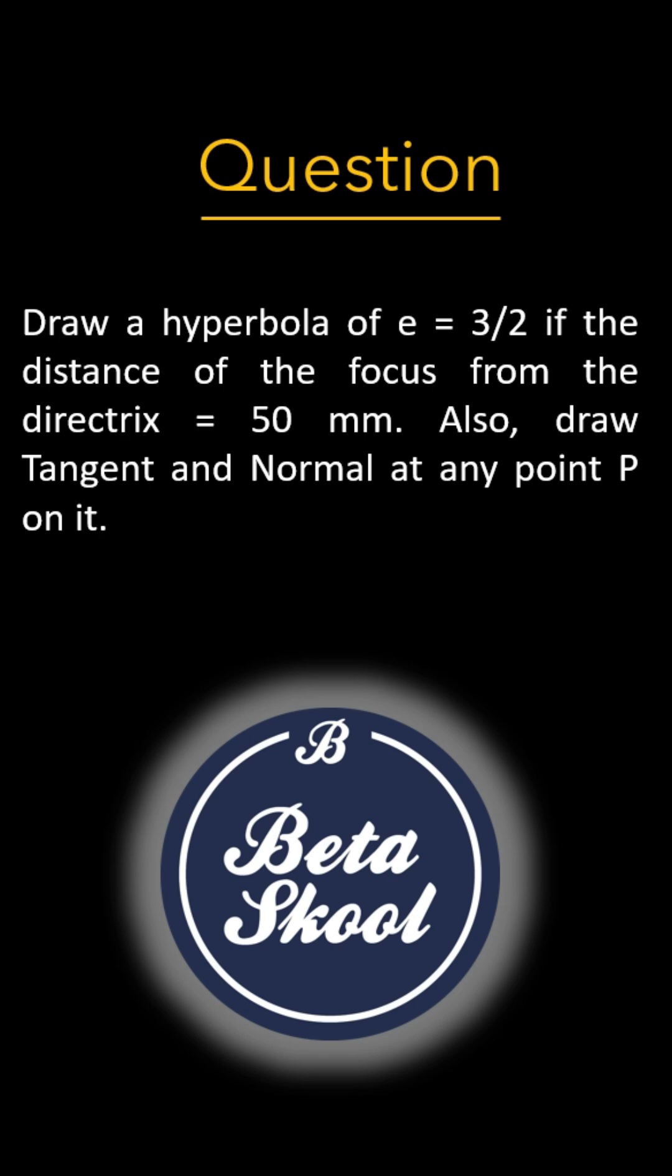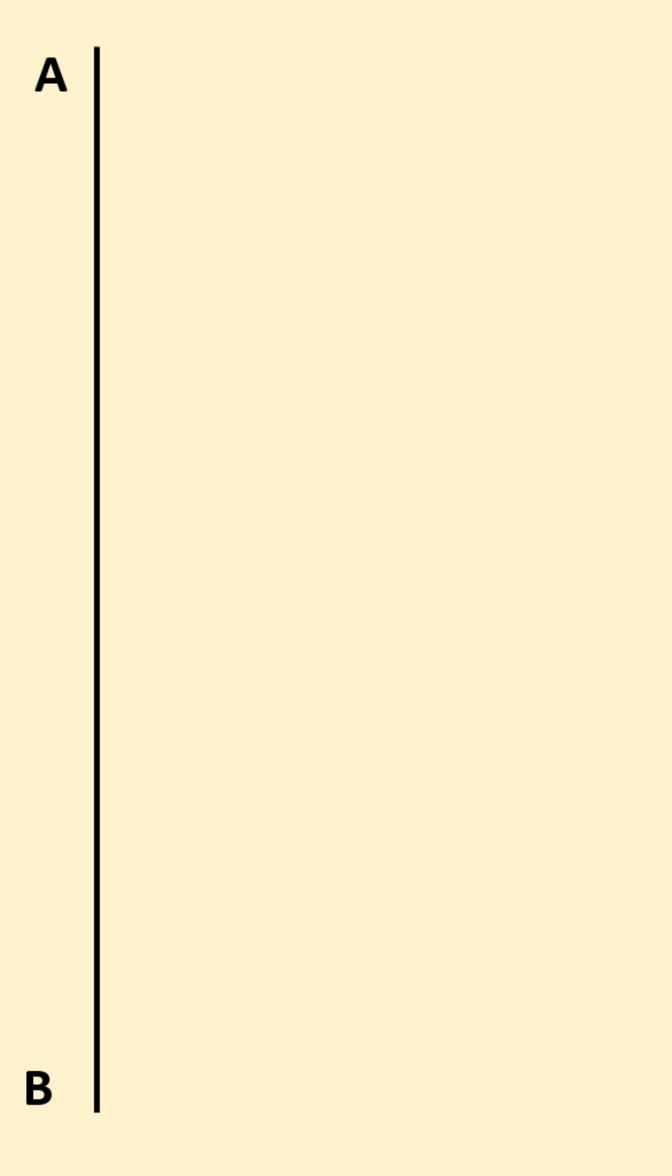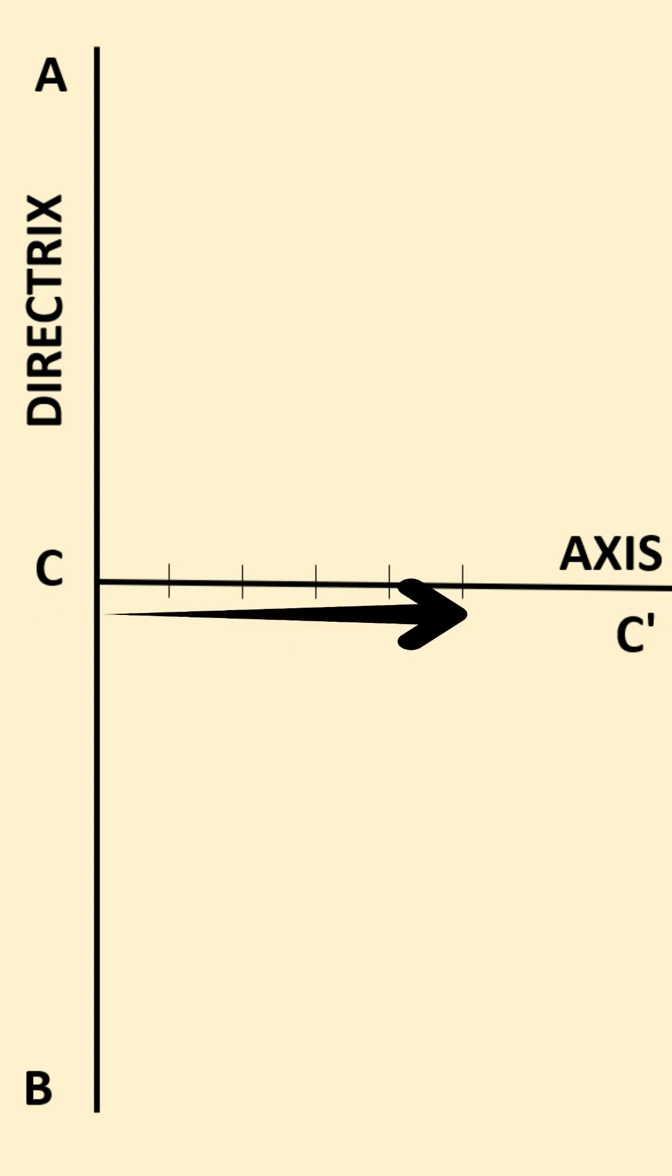Let's start. First you draw a vertical line AB which will serve as directrix. Then you draw a horizontal line CC' which will serve as axis. Now you mark CF 50 mm, which is given in the question.